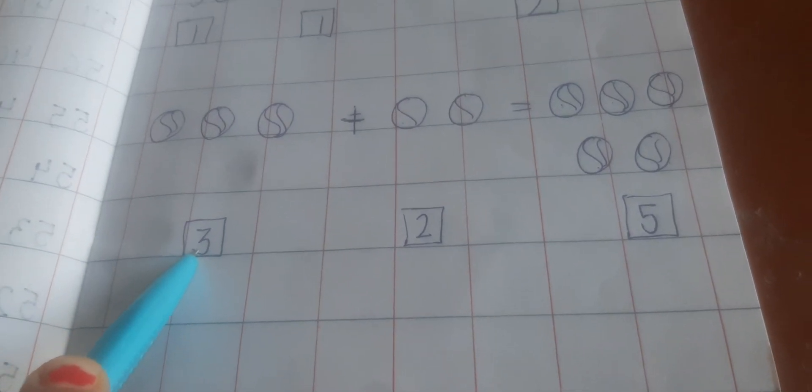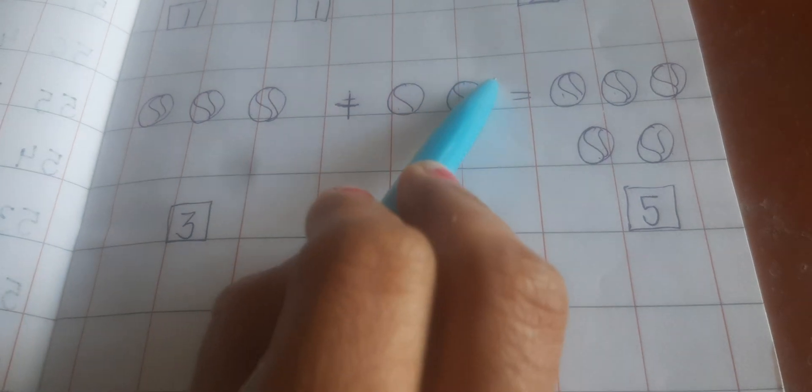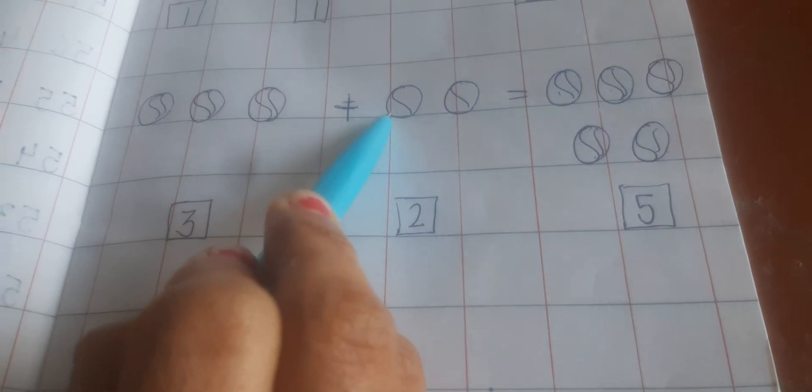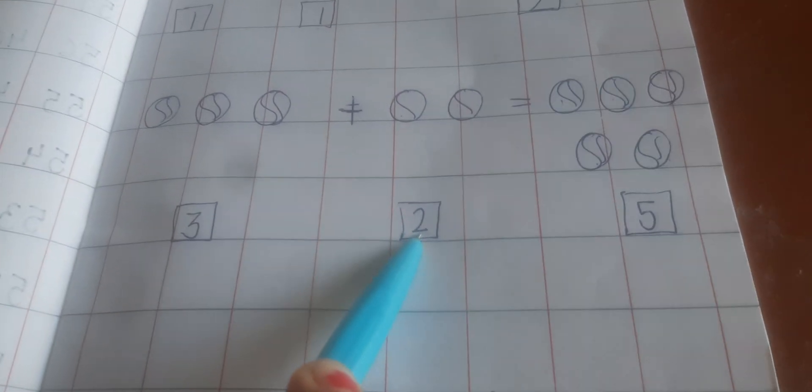Write down 3 in the box. Then how many balls you see? 1, 2. Write down 2 in your box.